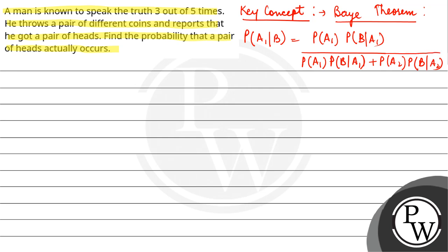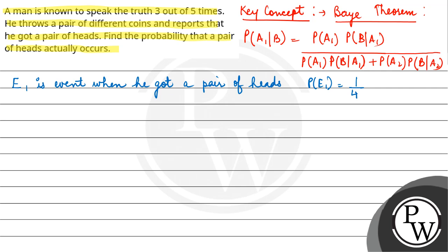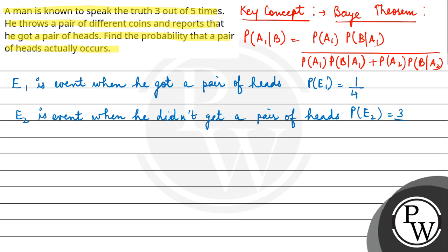We will consider the events. Let E1 be the event when he got a pair of heads. The probability of E1 is 1 by 4. E2 is the event when he did not get a pair of heads, so the probability of E2 is 3 by 4.